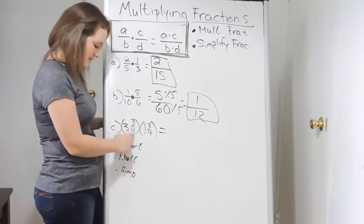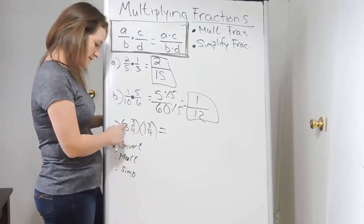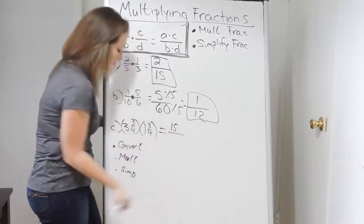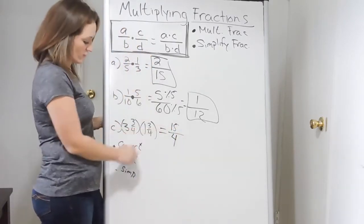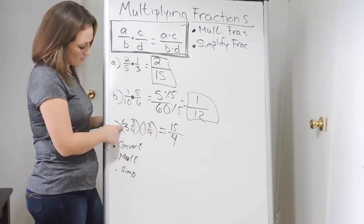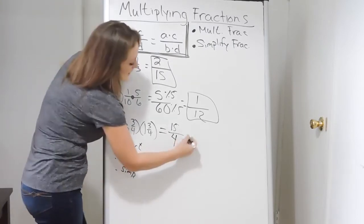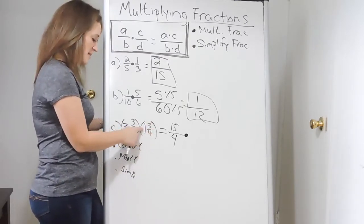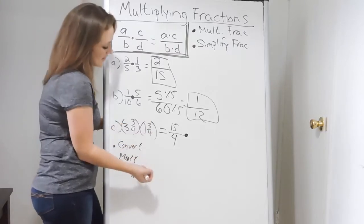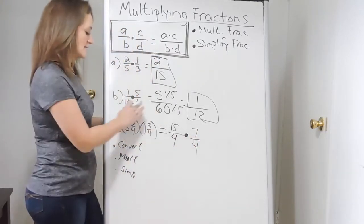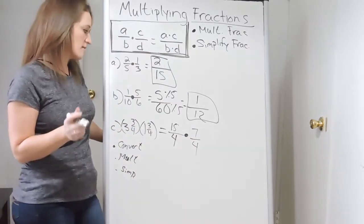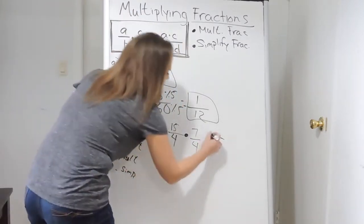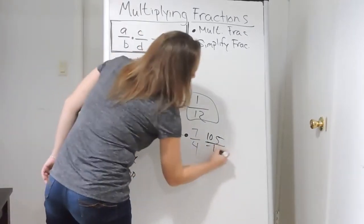Converting 3 and 3 fourths: take the denominator times the whole number — 4 times 3 is 12 — plus the numerator 3, gives 15. Put that over the same denominator of 4, so we get 15 over 4. For 1 and 3 fourths: 4 times 1 is 4, plus 3 is 7, giving us 7 over 4. Now multiply: 15 times 7 is 105, over 4 times 4, which is 16.